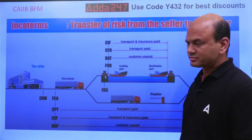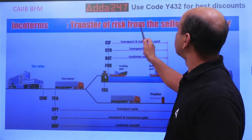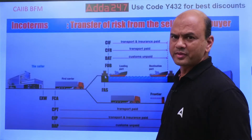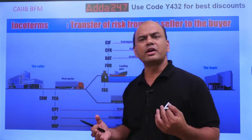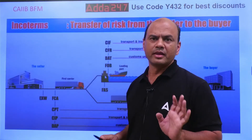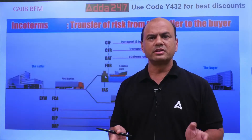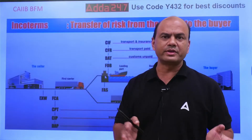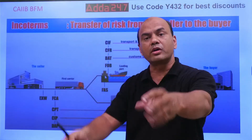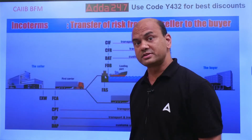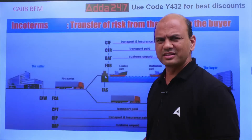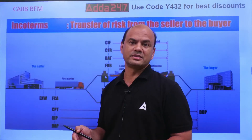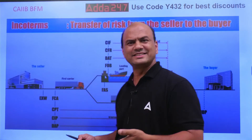Incoterms define the transfer of risk from seller to buyer. The basic idea is: I will do this, you will do that. For example, I'll manufacture the goods and you take them from me, or I'll deliver them to your place. It's all about who carries what risk up to what point.